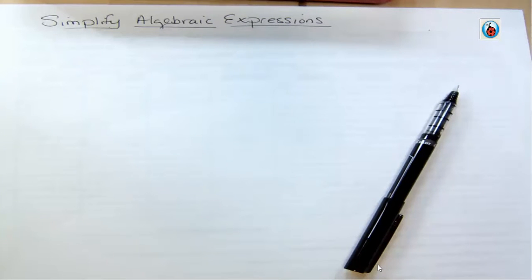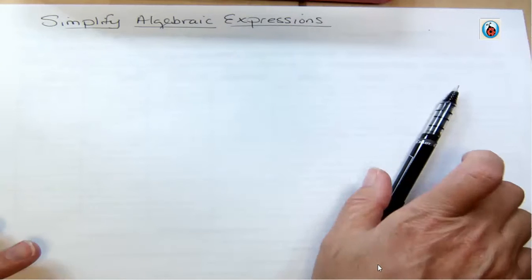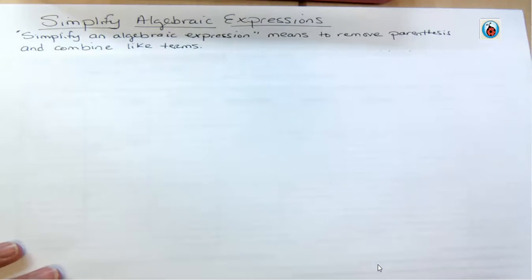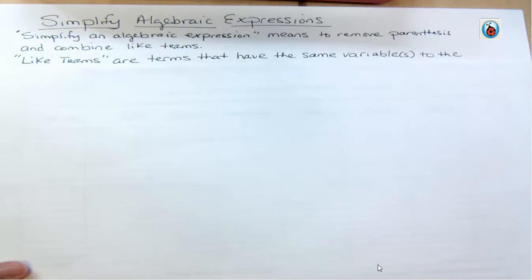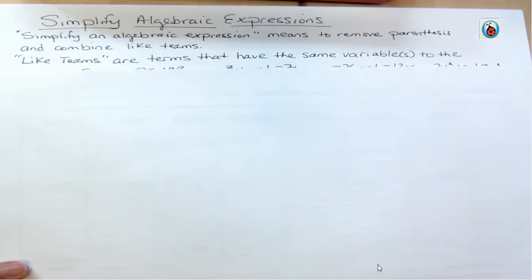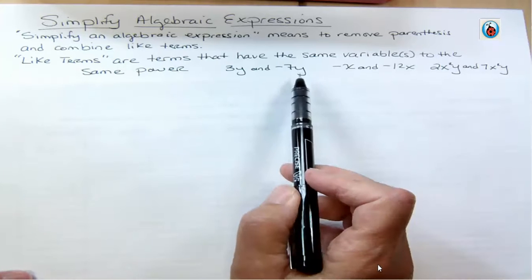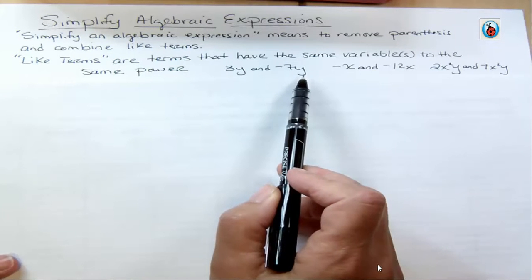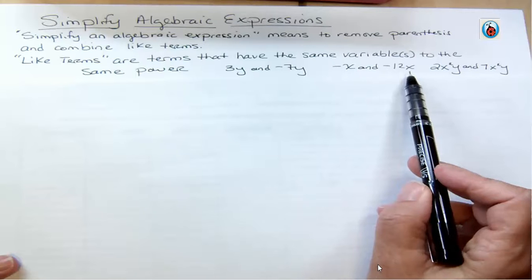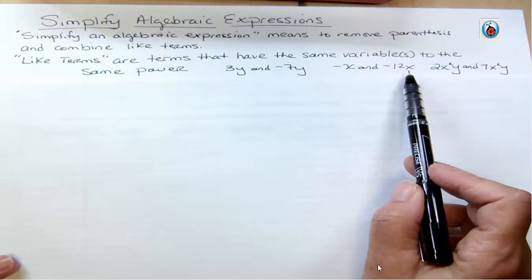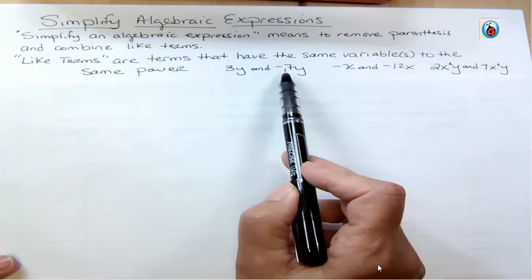Hi, I'm Carly McEvoy and today we're simplifying algebraic expressions. When I say simplify algebraic expression, I mean we're removing the parentheses if there are any, and we're combining like terms. It's really important to remember what like terms are — like terms are terms that have the same variable or variables to the same power. For instance, 3y and −7y both have y to the first power. −x and −12x both have x to the first power. Notice the coefficients — the numbers in front — can be positive or negative; that's not important. It's about the variable and the power.